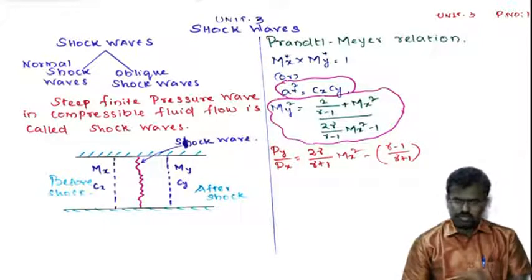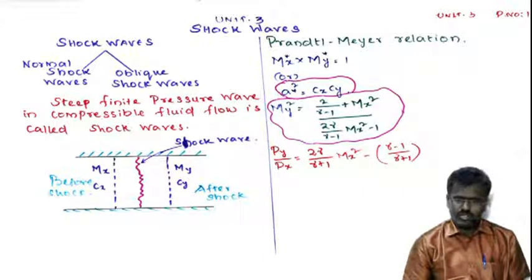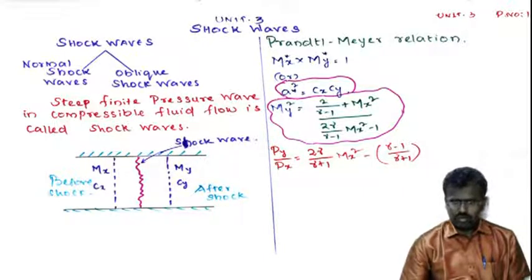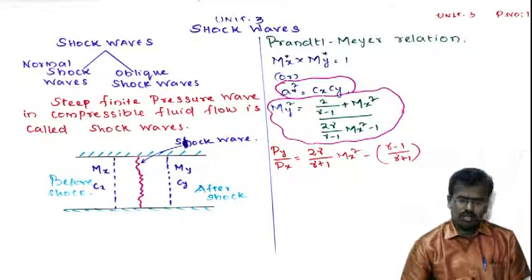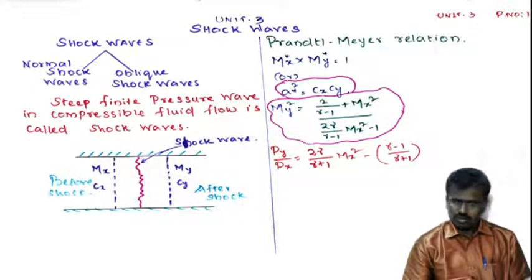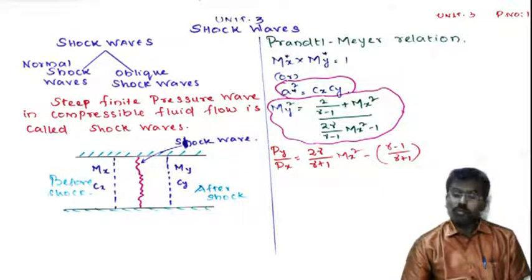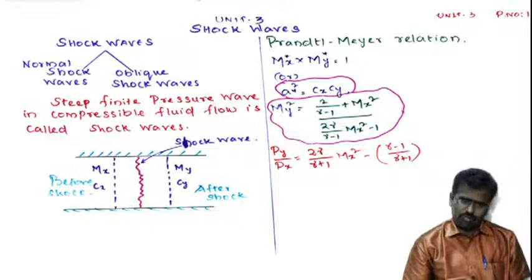Next is an important equation called the Prandtl-Meyer equation: mx* × my* = 1. This is the formula for finding the pressure ratio py/px, which equals 2γ/(γ+1) · mx² − (γ−1)/(γ+1).